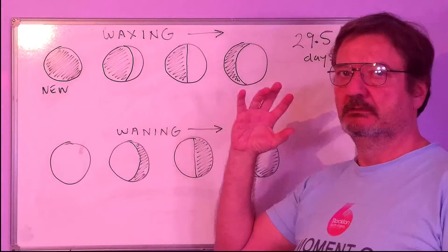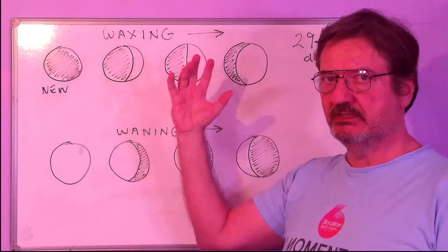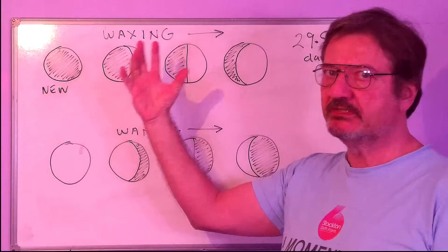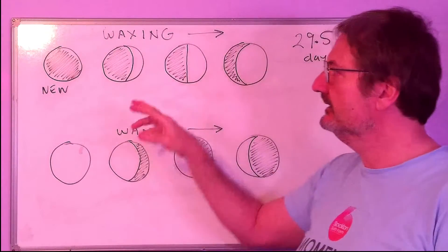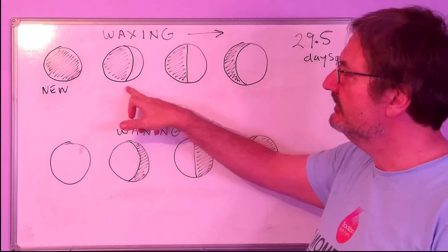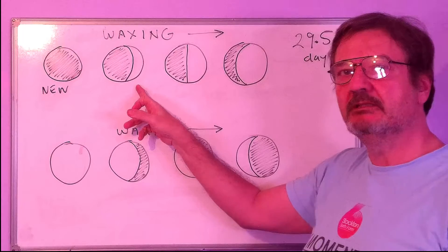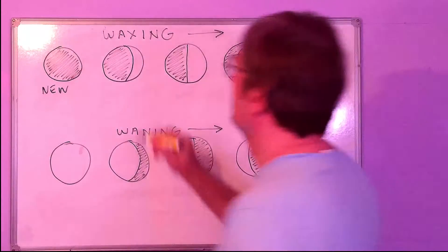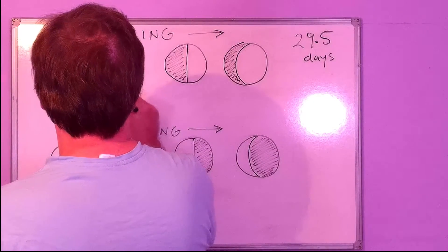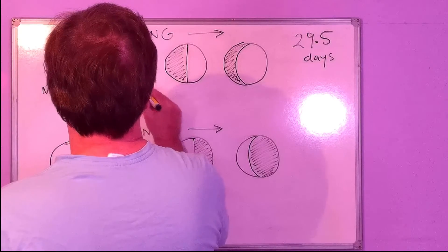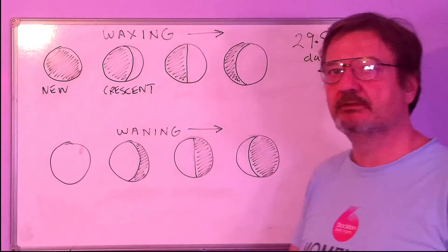Then, as the moon goes round the earth, we start to see some of the side of the moon which has light shining on it. The first phase of the moon we can see is this. This is a waxing crescent.